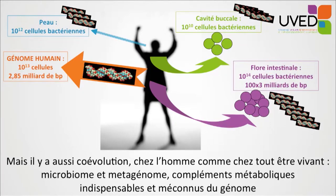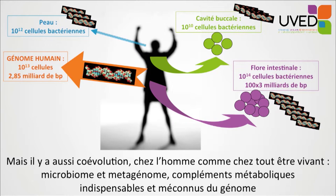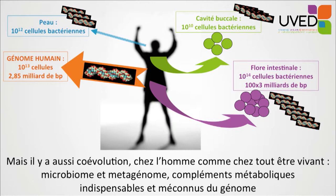Microbiota that doesn't really work well is called dysbiosis. Normally, microbiota looks like this. Here we have DNA — deoxyribonucleic acid — rotating onto itself. This is the DNA we have in our body. We have approximately two billion pairs of bases of deoxyribonucleic acid.